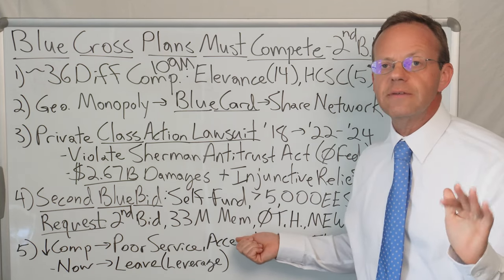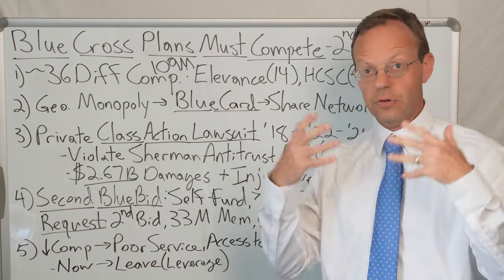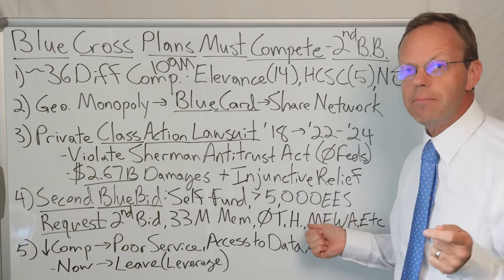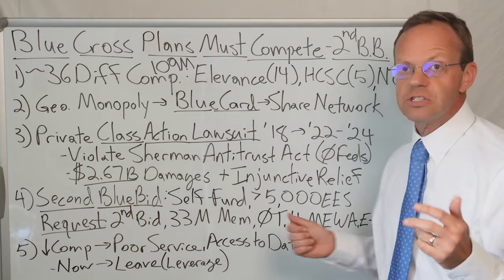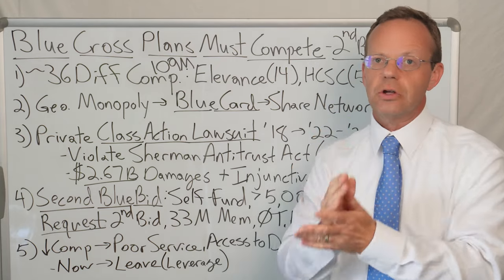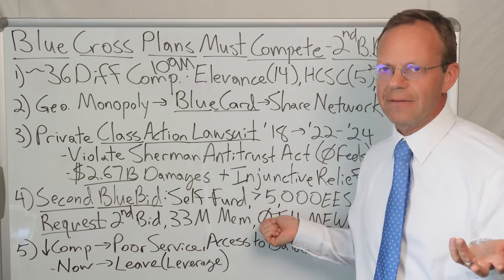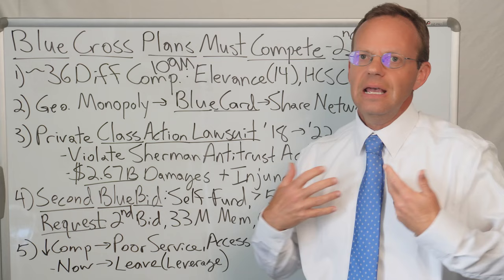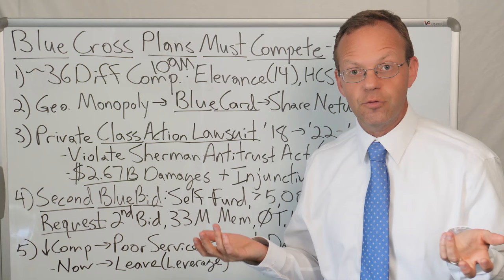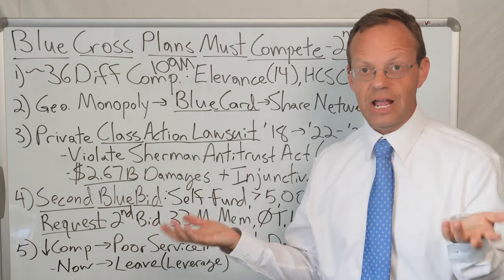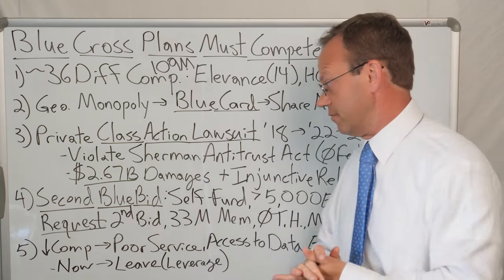So this only applies to individual employers. It does not apply to what are referred to as Taft-Hartley plans, which are the health plans for labor unions. This doesn't apply to what are referred to as MEWAs, which is an acronym, but it stands for a multi-employer welfare arrangement. So that's a group of employers. It has to only apply to a single employer. It was just the terms of the suit. Also, the fact that it's only for employers with more than 5,000 employees, I mean, that's obviously a round number that was sort of arbitrarily set. In my opinion, that's rather unfair. So great, you have more competition if you've got 5,000 or more employees, but what if you have 4,999? You totally get the shaft. And so arguably, this number needs to go down so that smaller self-funded employers can also benefit from this.